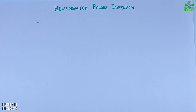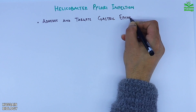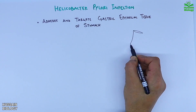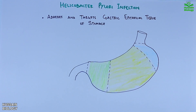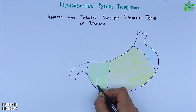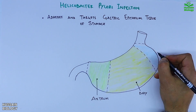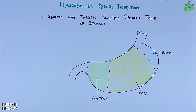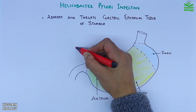Helicobacter pylori adheres and targets the gastric epithelial tissue of the stomach. Here in this diagram we can see the stomach — it has the antrum towards the duodenum, then the body, and then the fundus. Helicobacter pylori mostly resides and targets the antrum part of the stomach, as shown in the diagram.